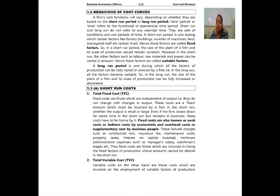Next, let us start with the behavior of cost curves. A firm's cost functions will vary depending on whether they are based on the short run or long run period. These periods refer to the functional or operational time period — short run and long run do not refer to any calendar time; they are sets of conditions. A short run period is one during which certain factors like factory buildings, number of machines, land, management, and staff remain fixed — these are called fixed factors. In the short run, the size of the firm's plant and its scale of production remain constant.